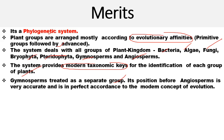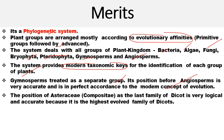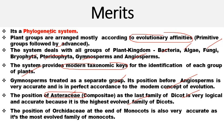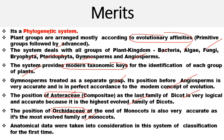Gymnosperms are treated as a separate group, and their position before angiosperms is very accurate and in perfect accordance with the modern concept of evolution. The position of Asteraceae as the last family of dicots is very logical and accurate because it is the highest evolved or most advanced family of dicots. The position of Orchidaceae at the end of monocots is also very accurate, as it is the most evolved family of monocots. Anatomical data were also taken into consideration in this system of classification for the first time.